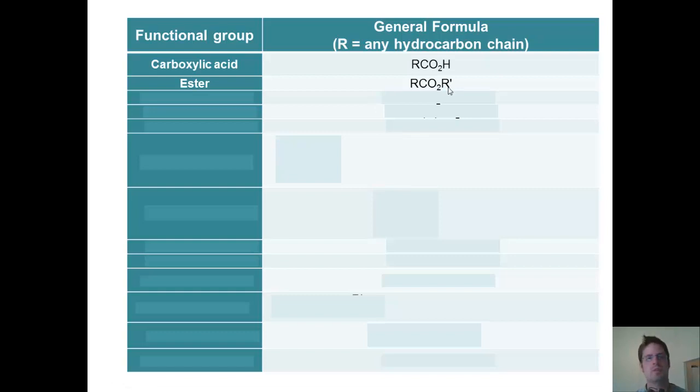Additional functional groups with their structures are shown here. Acid chlorides, which look like this. Amides, which look like this. Nitriles, which look like this. Aldehydes, which look like this. Ketones, which look like this.